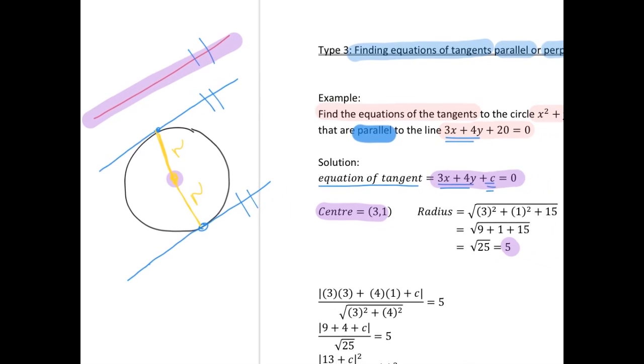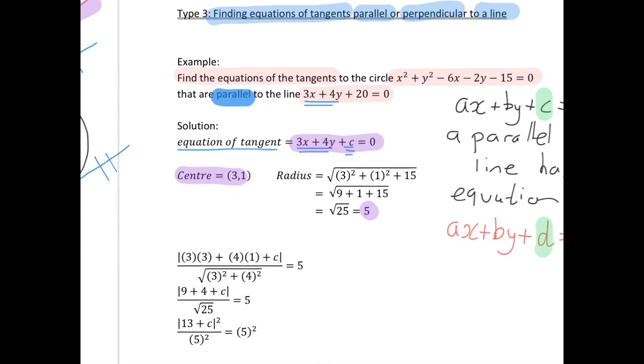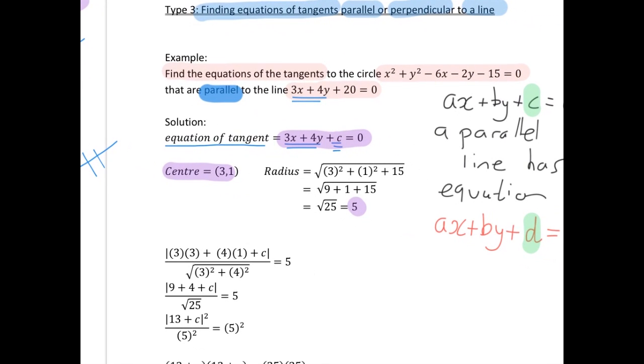So going back over here, the equation of our circle is this equation here. So we take our centre by looking at these two numbers, minus 6 and minus 2. So our centre in this case is the point (3, 1).